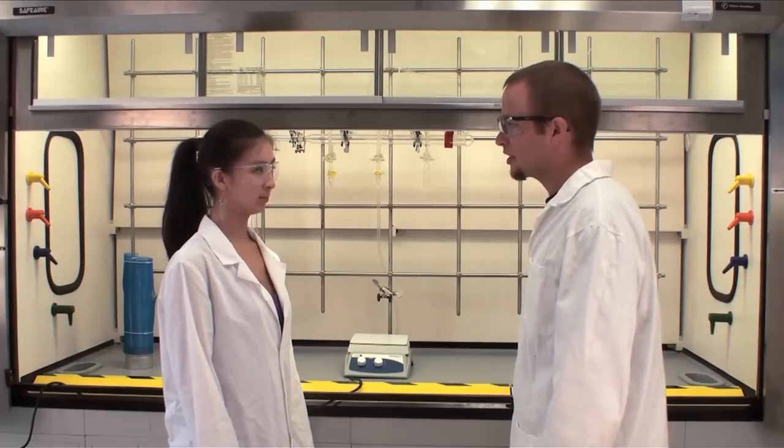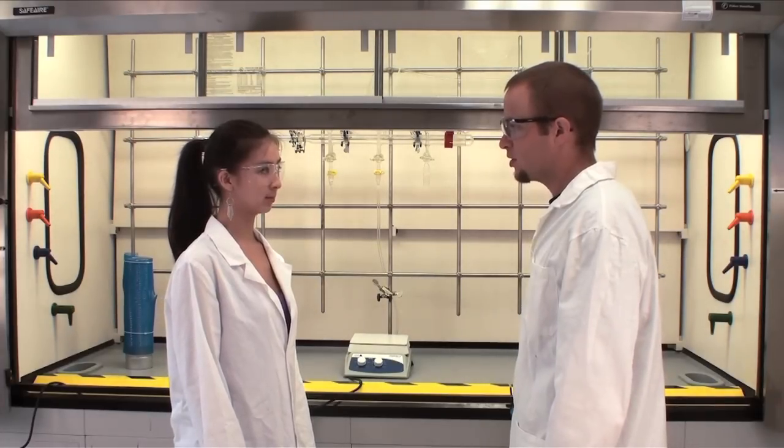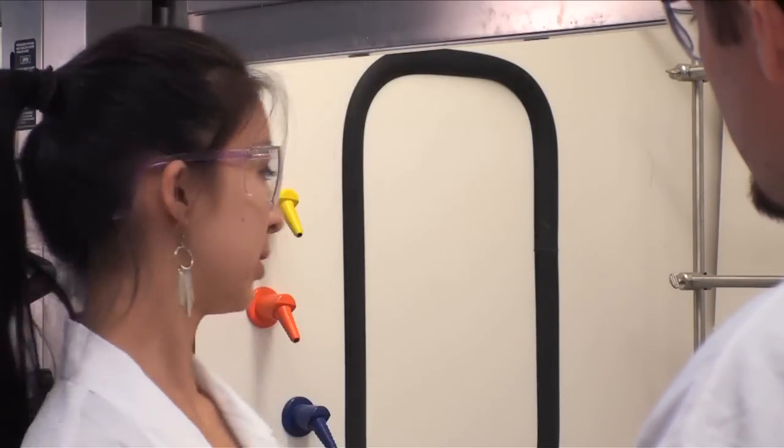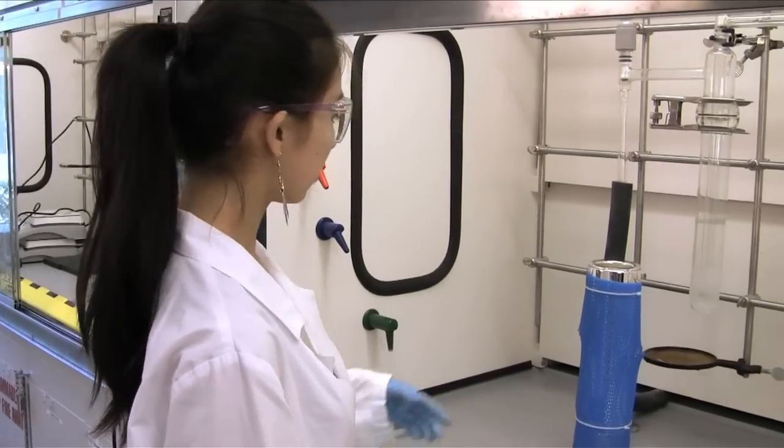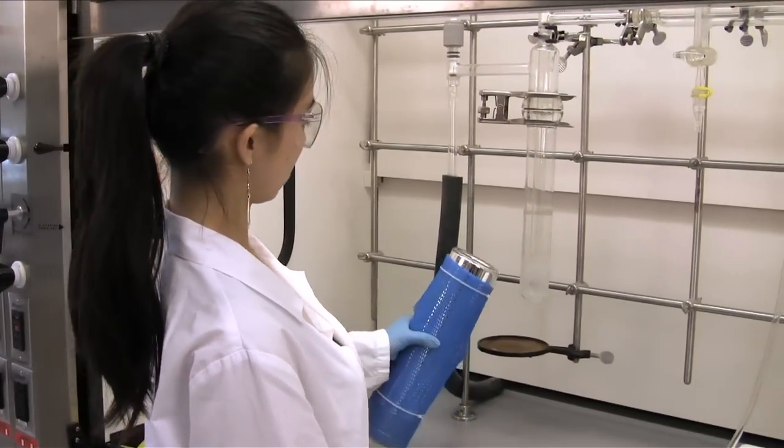Okay, now that we've connected the new nitrogen tank, it's time to turn on the vacuum pump. Do you know what to do? Yeah, I know we need to do things in a specific order. First, turn on the vacuum. And then, cool the trap with liquid nitrogen.